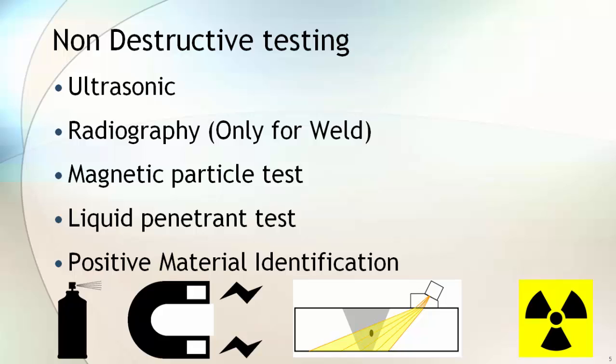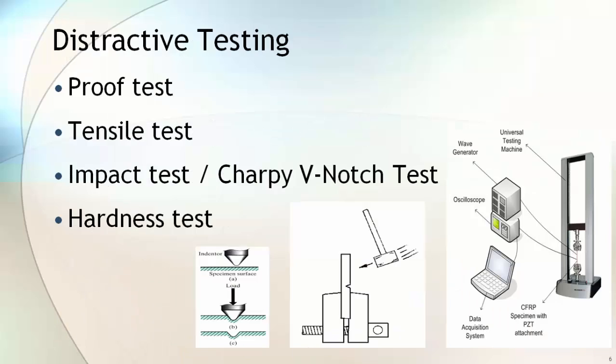This non-destructive testing ensures the soundness of the product. Ultrasonic testing, radiography, magnetic particle, liquid penetrant, and positive material identification are performed on the finished product. Radiography is done only on the weld seam.